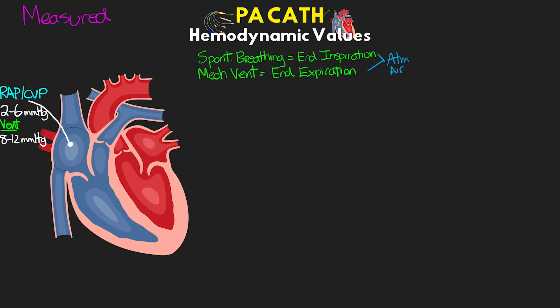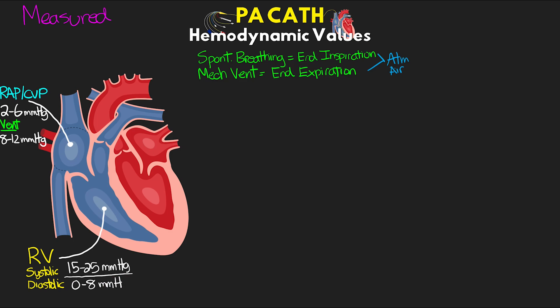Moving right along from the right atrium, we go to our RV pressure. This is going to consist of a systolic and a diastolic pressure. We do also get a mean pressure, but it's not something that we really use. The normal for our RV systolic is going to be 15 to 25 millimeters of mercury. And then for our RV diastolic, this is going to drop all the way down anywhere from 0 to 8 millimeters of mercury.